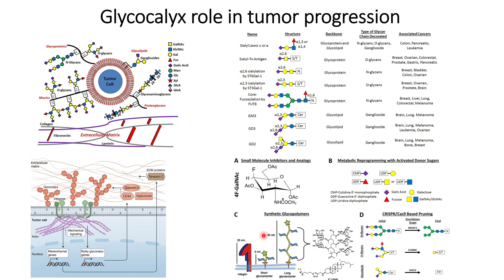The third approach is synthetic glycopolymers. Short synthetic glycopolymers bind close to the integrins and disrupt or prevent bulkier carbohydrate structure formation near the integrins, so that integrins are free to interact with immune cells — in contrast to long glycopolymers, which prevent integrin interactions with the immune system.